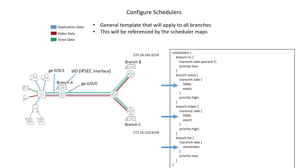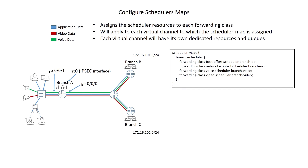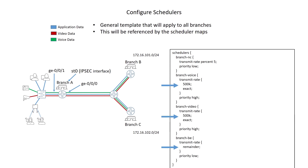This is our scheduler configuration. The schedulers are a template for the traffic that will enter the virtual channels. Each channel that has these schedulers mapped to it will have its own queues available. In this example, each channel will be broken down into best effort, voice, video, and network control traffic. The configured transmit rates limit each type of traffic to about 500 kilobits per second for voice and video, and assign slightly different values to best effort and network control. The exact keyword caps the traffic at that rate without letting it borrow transmit rate from other queues that may not be using their full resources.